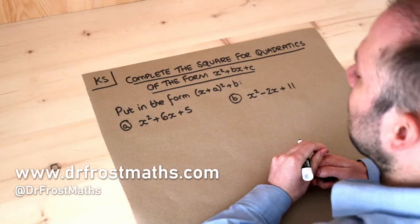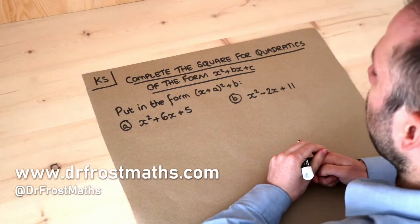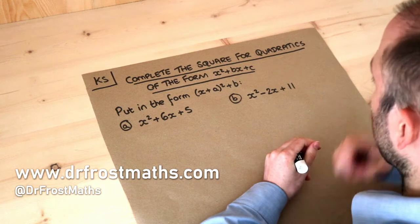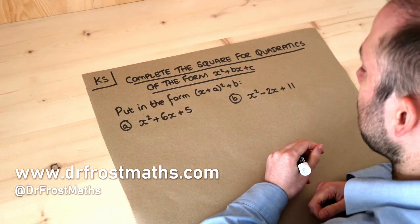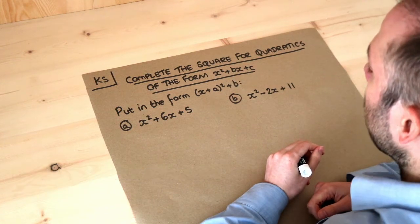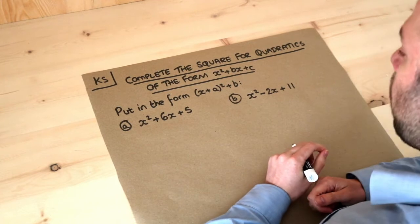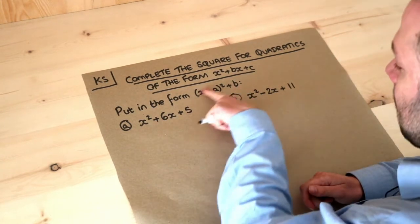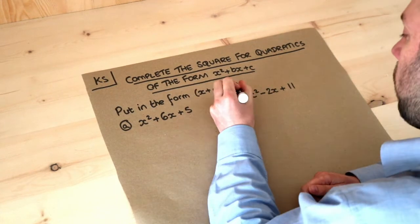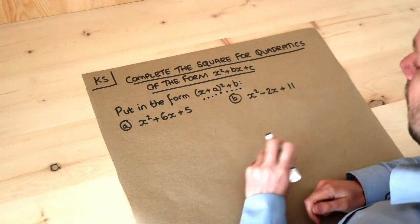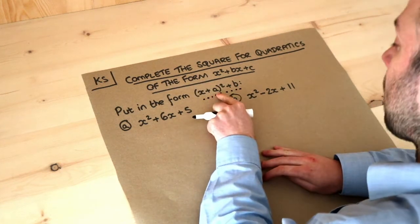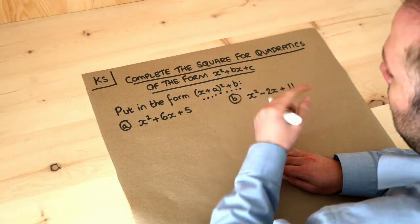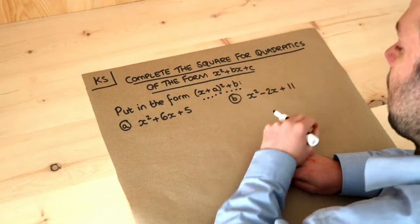Hello and welcome to this Dr. Rosemath's key skill video on completing the square for quadratics of the form x squared plus bx plus c. What it means to complete the square is to put a quadratic like this into this particular form — where we have x plus or minus some number, all squared, plus or minus something at the end.